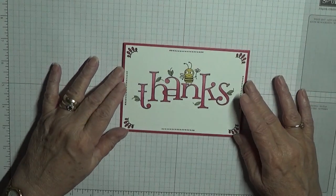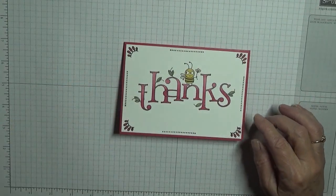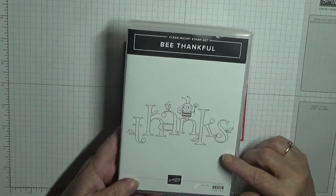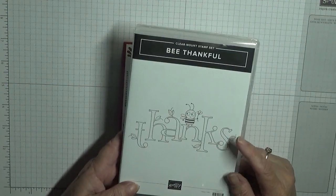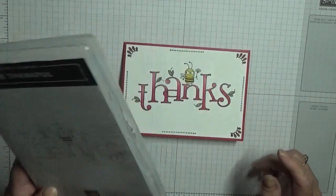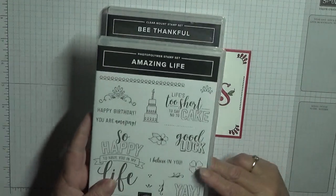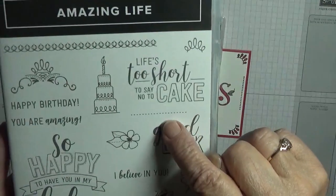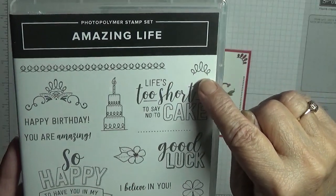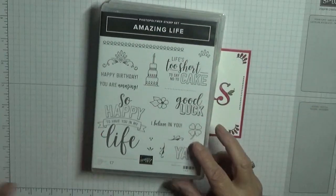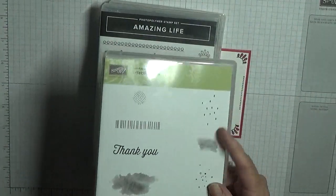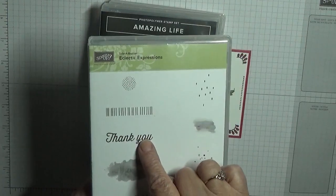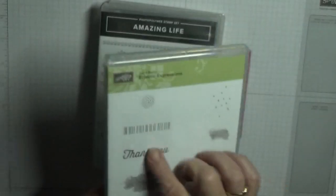To make this card I'm using Be Thankful, which is actually going to carry over into the new catalog. I'm using Amazing Life just for the little dashes here and that little swirly thing for the corners. And this is retired from last year's Celebration, but it's the only stamp I've got with a really nice thank you on it, so I'll be using that in quite a few other cards.